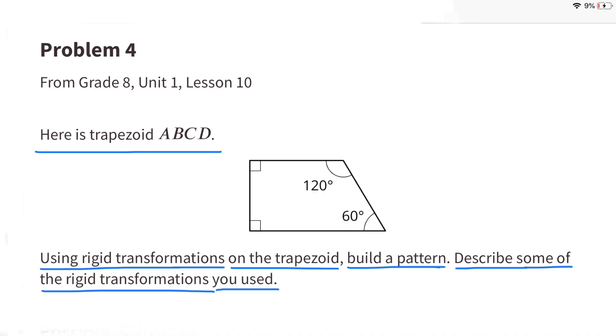Number 4. Here is trapezoid A, B, C, D. Using rigid transformations on the trapezoid, build a pattern. Describe some of the rigid transformations you used.